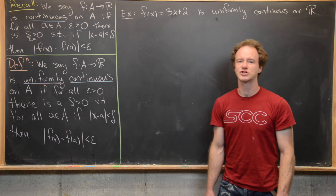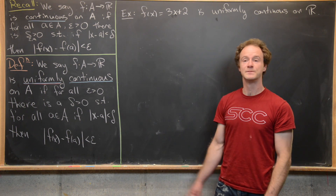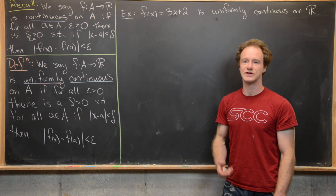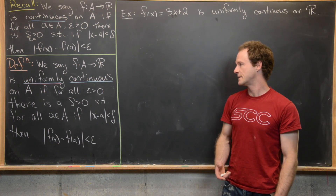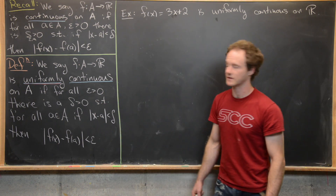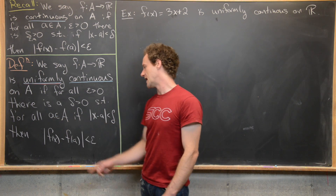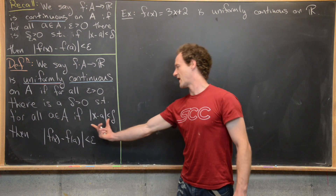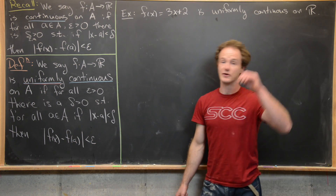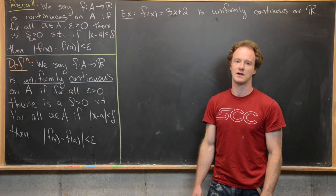Now let's contrast that with the definition of uniform continuity. We say that f from A to R is uniformly continuous on A if for all epsilon greater than zero, there is a delta greater than zero, such that for all little a in A, if |x - a| < delta, then |f(x) - f(a)| < epsilon.